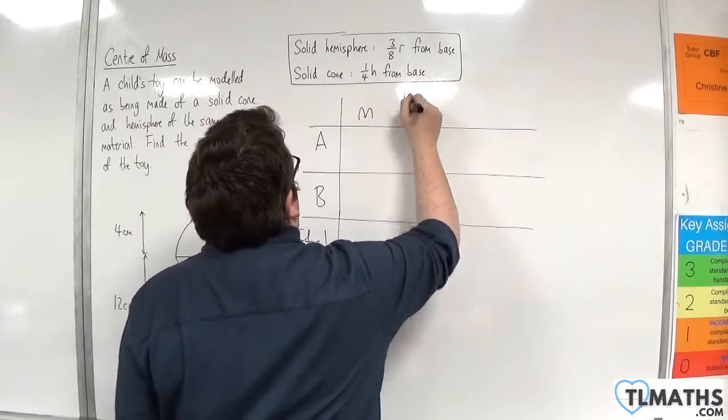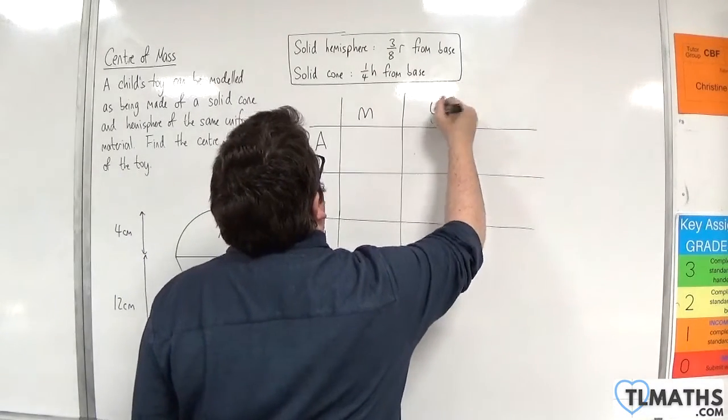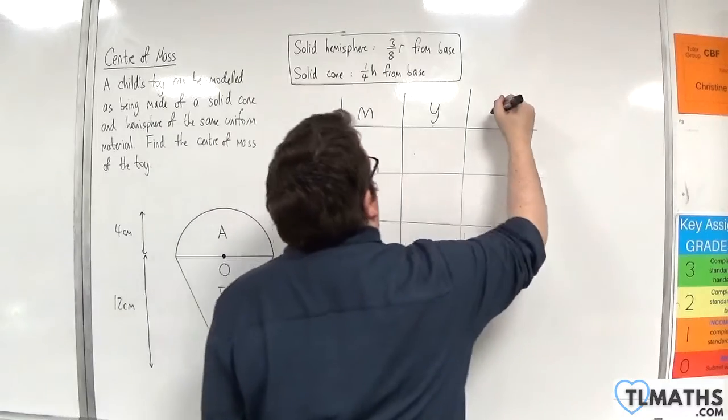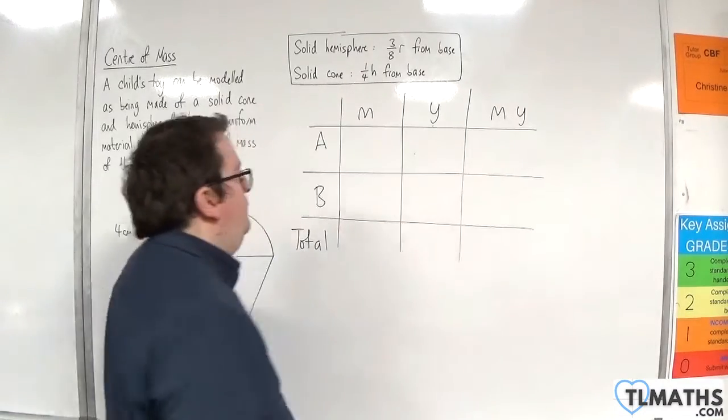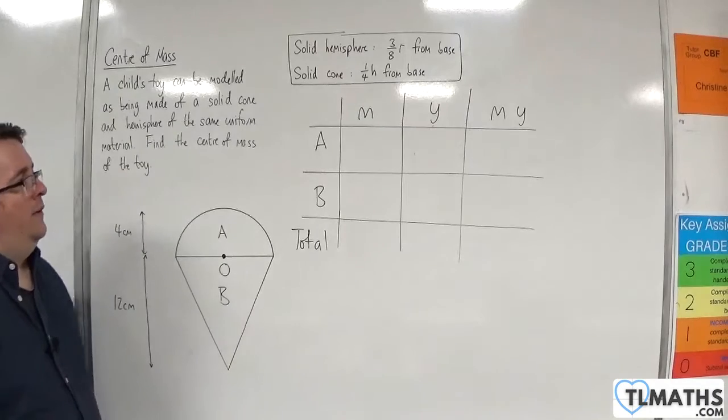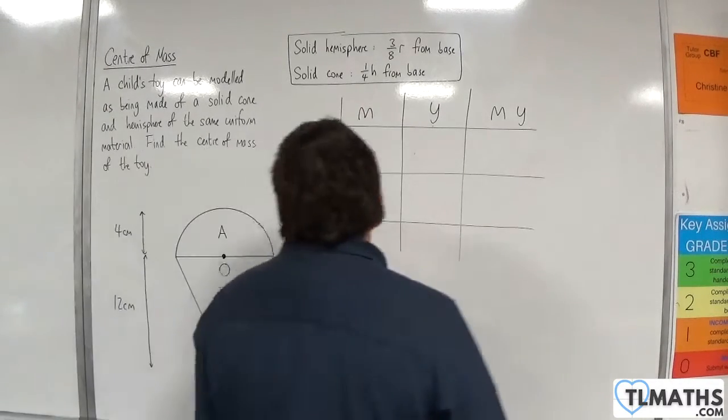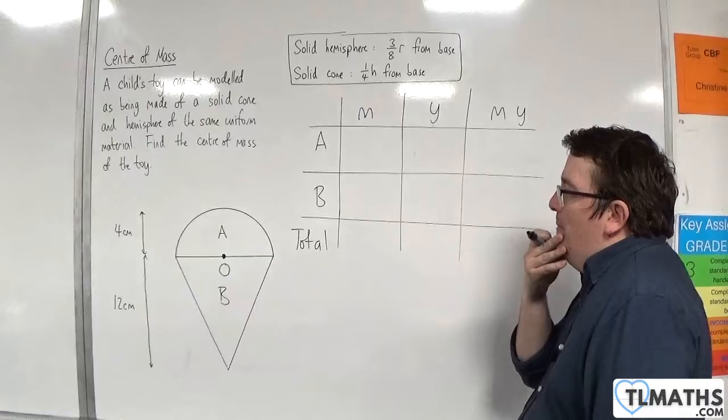So I'm going to have the mass, the Y-coordinate, the center of mass, and M times Y. OK, let's make this as easy as possible. So first of all, we've got the mass of the hemisphere.